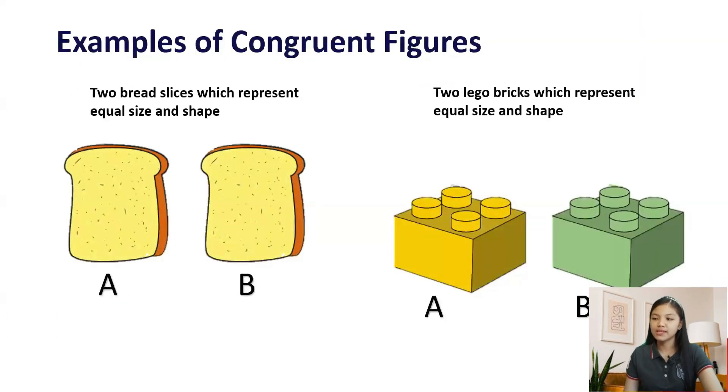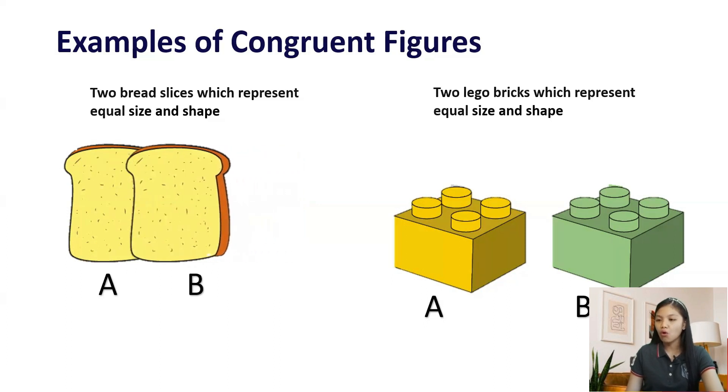Here are some examples of congruence. Two bread slices, which represent equal size and shape. If you place one slice of bread over the other, you will find that both the slices are of equal size and shape.